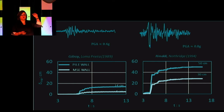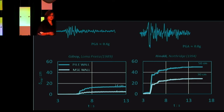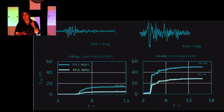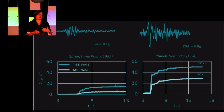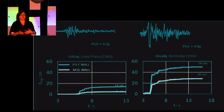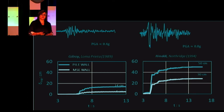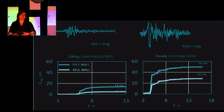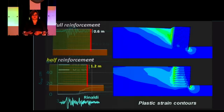In the smaller earthquake, both systems are going to survive — they have small displacements and could even be reused. But in the large one — what we call the maximum considered earthquake in codes — the MSE wall displaces about 25–30 centimeters and will probably be okay, while the other one is going to collapse and cannot be reused. Codes do say that after an earthquake at that level your structure will give you the chance to get out alive, but it doesn't say what happens after — it warns you that you might have to demolish what you've built. Life safety is satisfied, but not necessarily life quality, which is what we want to look at in the future.